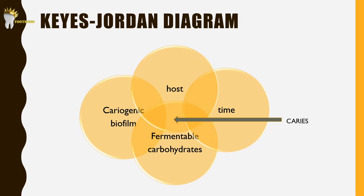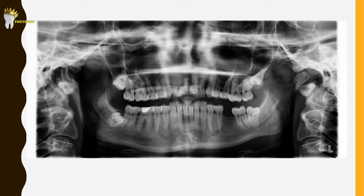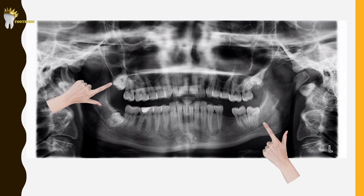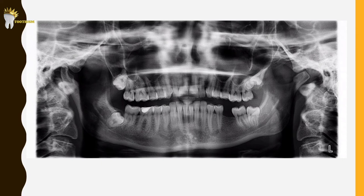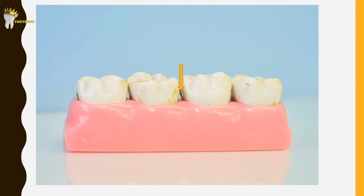Host factors refer to human beings — what we have that contributes to caries formation. First and foremost is tooth morphology and position in the arch. Caries most likely start in deep pits and fissures because food impaction is more likely there, making occlusal surfaces more prone to caries. Mandibular first molars are the most susceptible among permanent teeth, closely followed by maxillary first molars. When teeth are crowded there is a high chance of caries due to poor food impaction and difficulty cleaning. Partially impacted third molars also increase caries risk. After pits and fissures, proximal surfaces of teeth immediately gingival to the contact area are the second most susceptible areas.